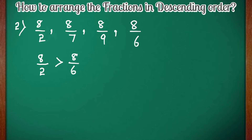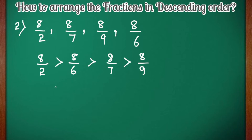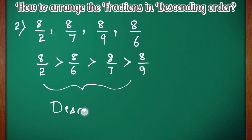8 by 2 is greater than 8 by 6, is greater than 8 by 7, is greater than 8 by 9. So here 8 by 9 has the lowest value. The greatest fraction is 8 by 2 and the lowest fraction is 8 by 9. This is how you can write fractions with the same numerators in descending order.